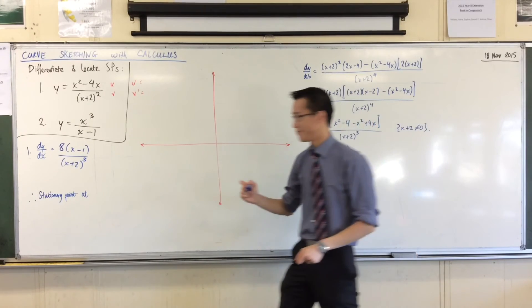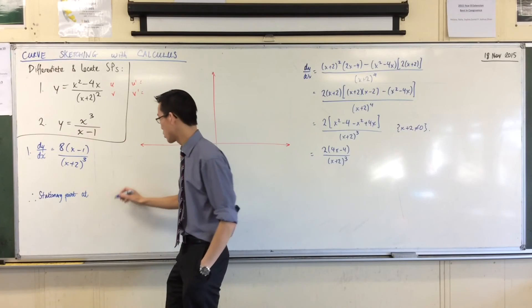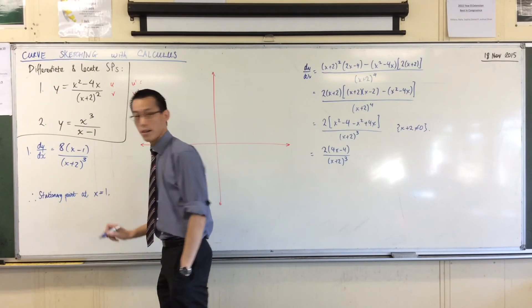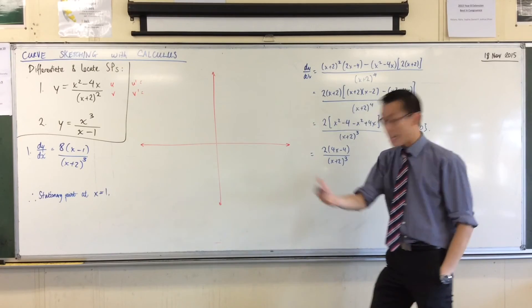So where is my stationary point? You can just read it off, right? It's when the whole thing is zero. So it's x equals one. Okay. Sorry, say that again. Okay. Yeah, good.